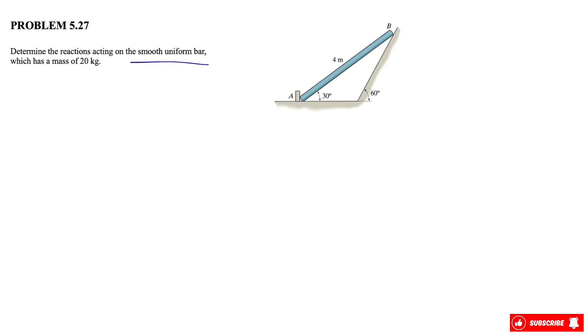So at point A, we kind of have a fixed support that is limiting the motion both in x and y. So we call it Ax and Ay. Let's show our positive side for x and y here. So we have the main support at point A.